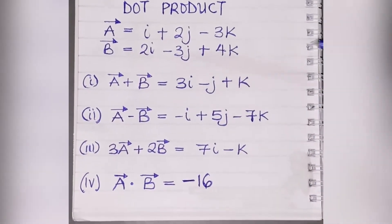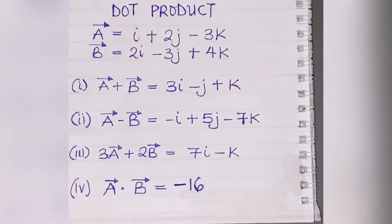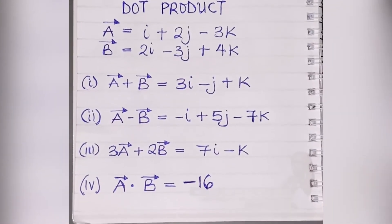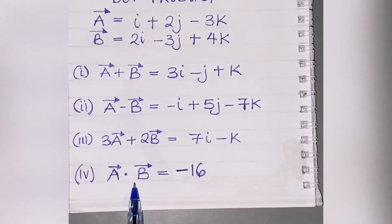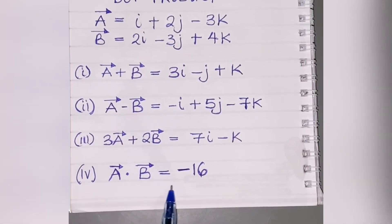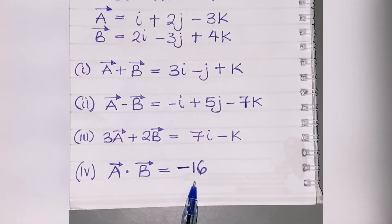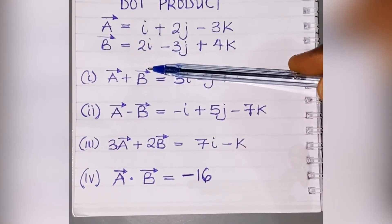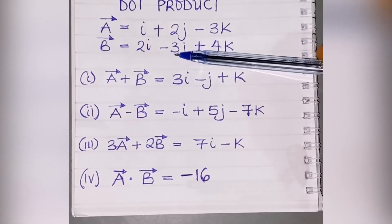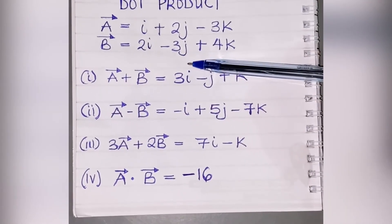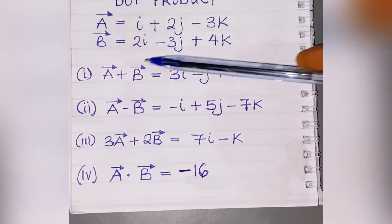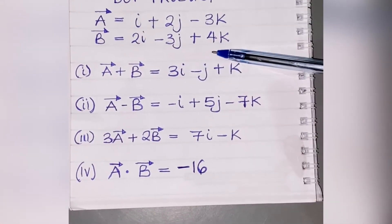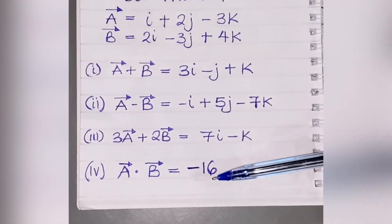Don't forget that dot product is also called scalar product of vectors — you can use either term. For the dot product, you multiply corresponding coefficients: one times two is two, two times minus three is minus six, and minus three times four is minus twelve. So two minus six gives minus four, and minus four minus twelve gives minus sixteen. That's how we got the answer.